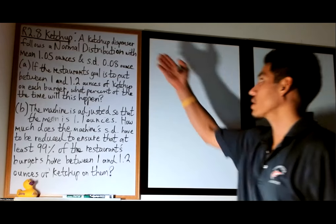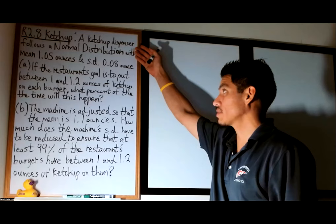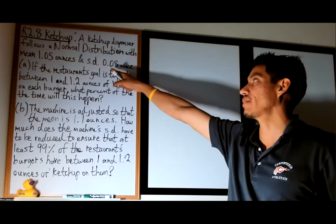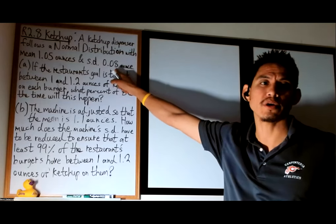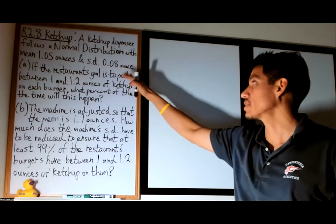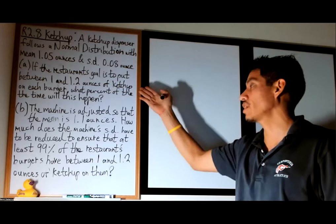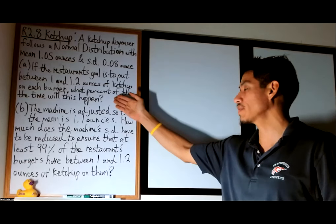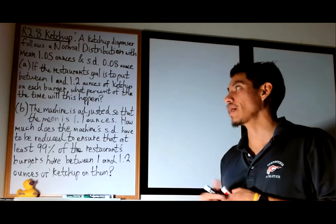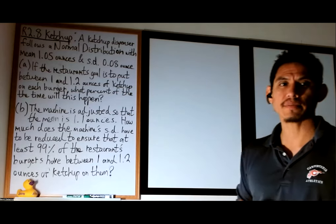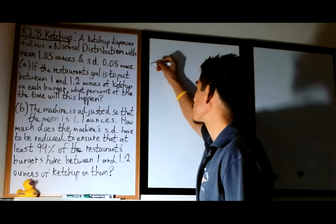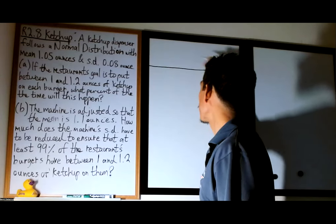Here we have a restaurant with a ketchup dispenser that follows the normal distribution with a mean of 1.05 ounces and a standard deviation of 0.08 ounces. Part A says the restaurant's goal is to put between 1 and 1.2 ounces of ketchup on each burger, and we want to find the percent of the time that this will happen. Let's begin by drawing a normal curve.